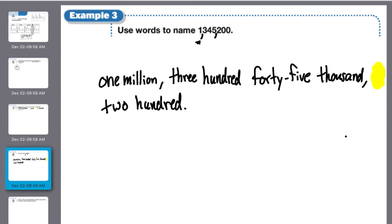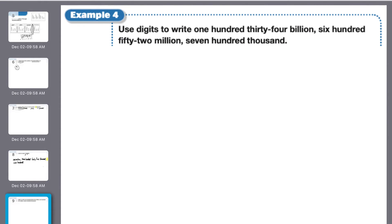Use digits to write one hundred thirty-four billion, six hundred fifty-two million, seven hundred thousand. So one hundred thirty-four billion, one three four.